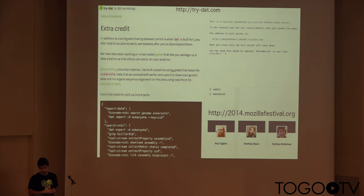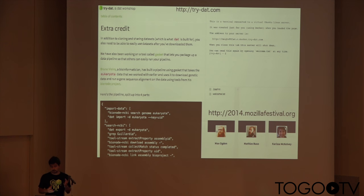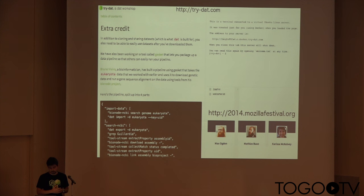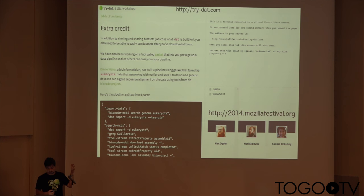Another project that Bionode collaborates a lot with is DAT. DAT is another Node.js project trying to build a Git for data — to version data — so you can version tabular data, JSON, CSV, but also blobs. It has content blob storage, and there's a lot of knowledge sharing between DAT and Bionode. You can go to the URL and actually play with it, and one of the steps of the tutorial is focused on Bionode pipelines.